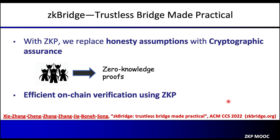So how can we do better and achieve both goals? We want to remove trust on external intermediaries to build a more secure bridge, but also be practical and efficient — enabling efficient on-chain verification and being applicable to all blockchains that support smart contracts. In our recent work called ZK Bridge, we utilize succinct proofs and replace honesty assumptions with cryptographic assurance, supporting efficient on-chain verification.